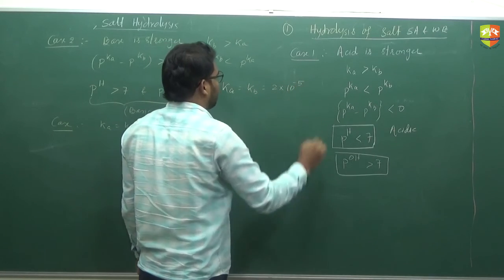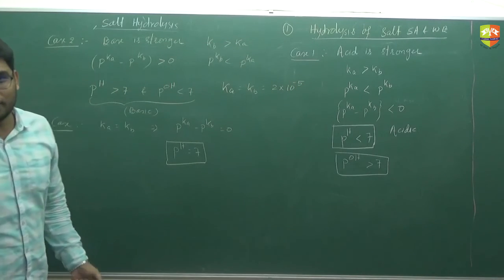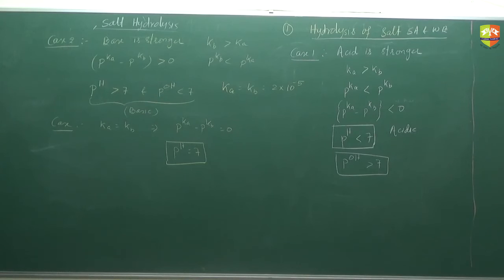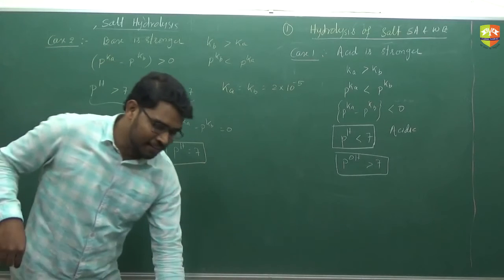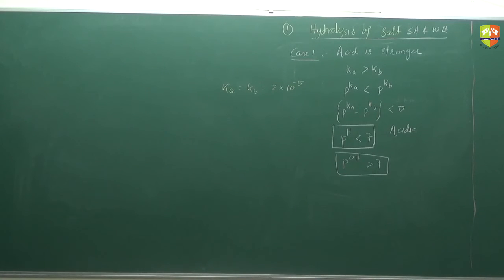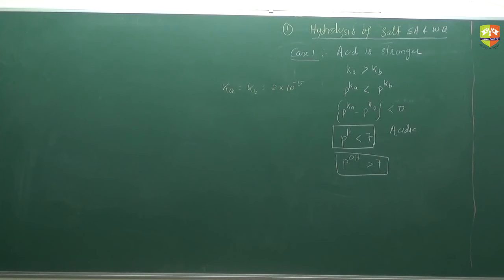The Ka and Kb values will always be given in that question. You're trying to find out answers using those. The answer for question 1 is approximately 9.85, but since it's 100 ml mixed with 100 ml, approximately 8.8. For question 2, approximately 5.1 or 5.2. For question 3, it is 7.